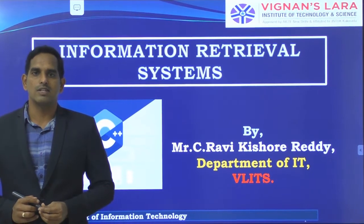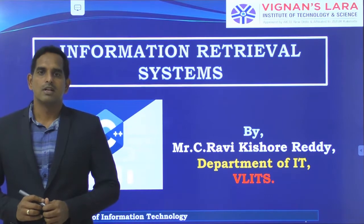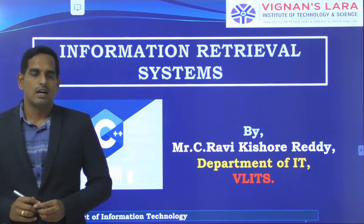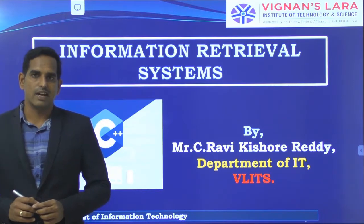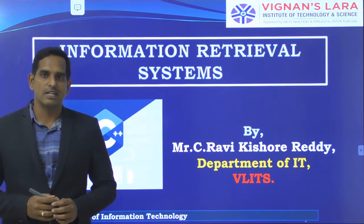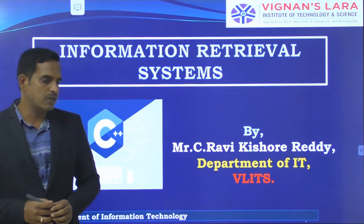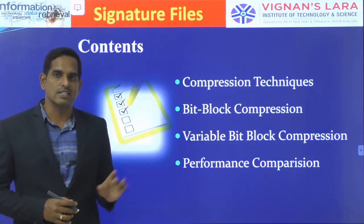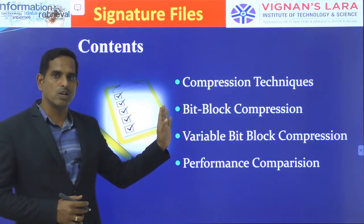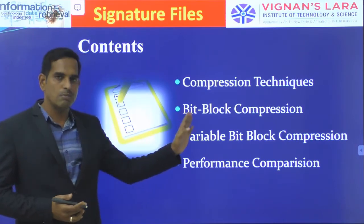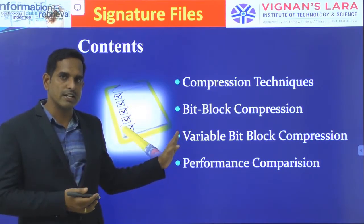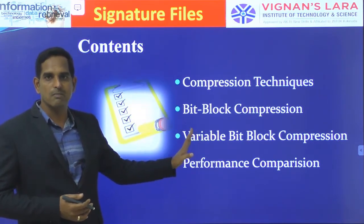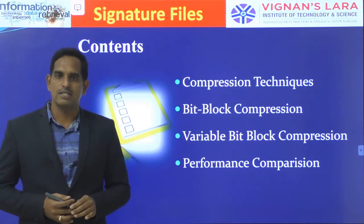Greetings everyone. We will continue our discussion on information retrieval systems. In the previous sessions we started about what is a signature file and how to create a signature file. We looked at what is a sequential signature file and its various classifications. In this session we will be looking at those classifications and learning about one particular classification technique: compression techniques, including bit block compression, variable bit block compression, and their performance comparison with the basic sequential signature file.